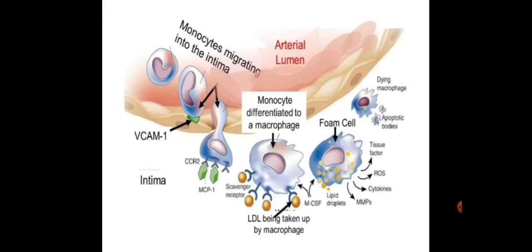White blood cells like monocytes normally pass freely through blood vessels and do not attach to endothelial cells as they stream past. However, when endothelial cells are damaged, they express adhesion molecules that can capture nearby white blood cells. These white blood cells undergo a morphological change allowing them to flatten and squeeze between the endothelial cells — a process called diapedesis. The white blood cells are then able to encounter free radicals. When free radicals come into contact with low-density lipoprotein, oxidation occurs. The oxidized LDL is especially effective at attracting and activating white blood cells.